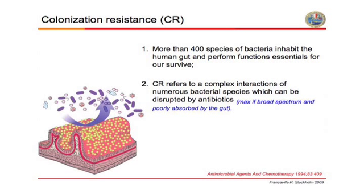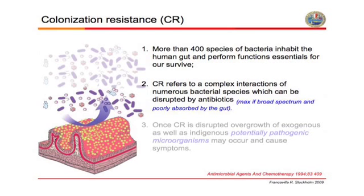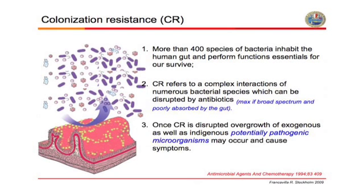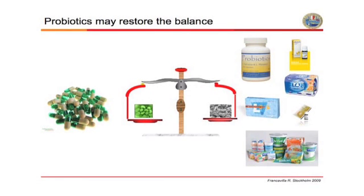If we take an antibiotic, we will disrupt this interaction and this may cause symptoms. Once your colonization resistance is disrupted, you may well have overgrowth of bacteria that are potentially pathogenic — either resident or coming from outside — and this overgrowth may be responsible for symptoms. The rationale is that if an antibiotic is reducing your own flora, you may restore this flora by the co-administration of probiotics.